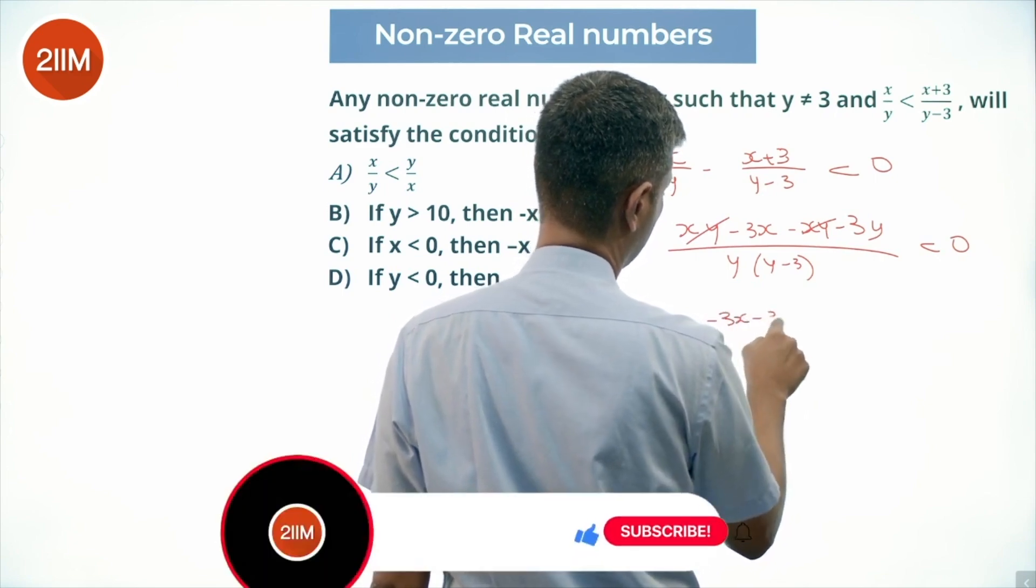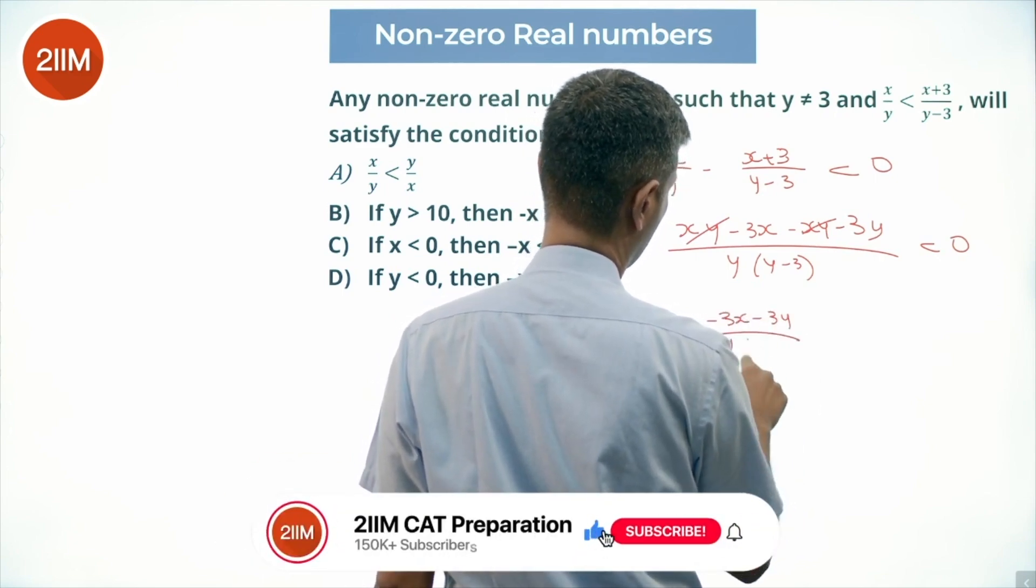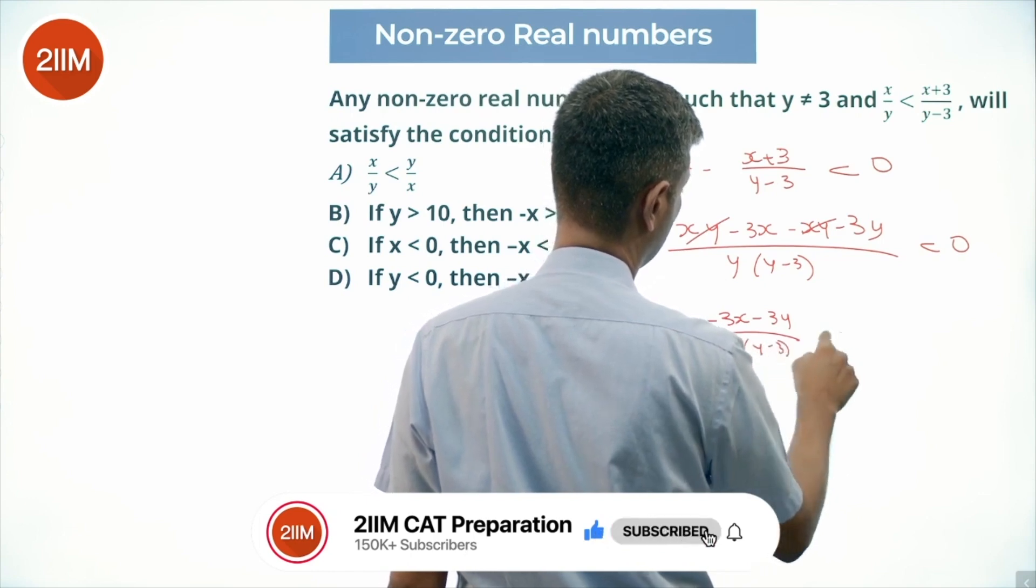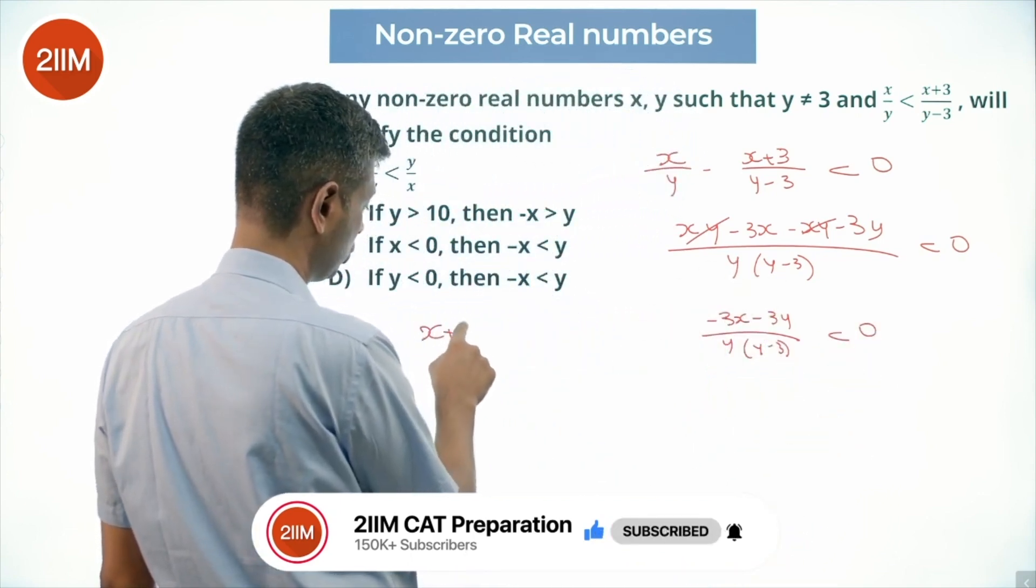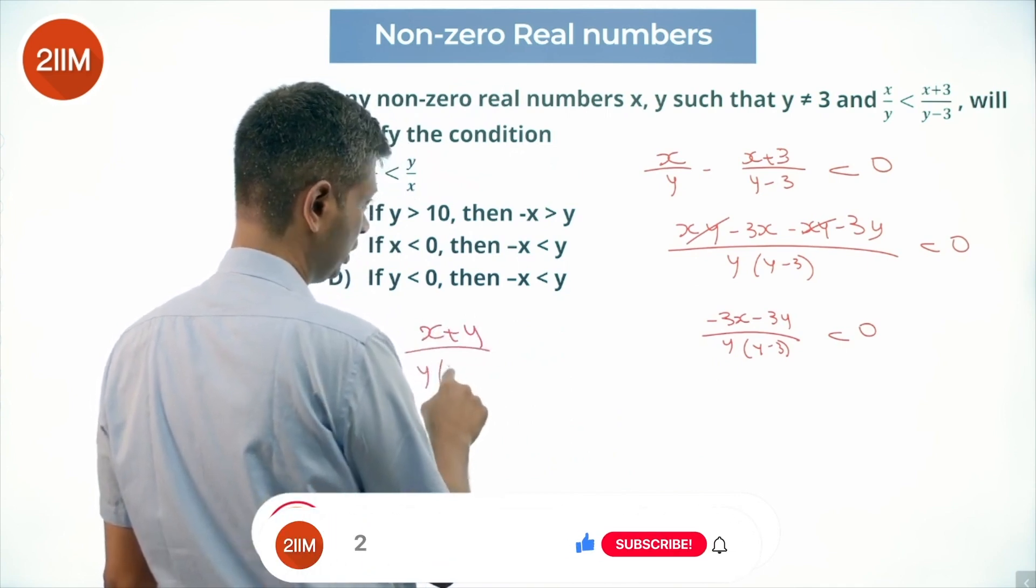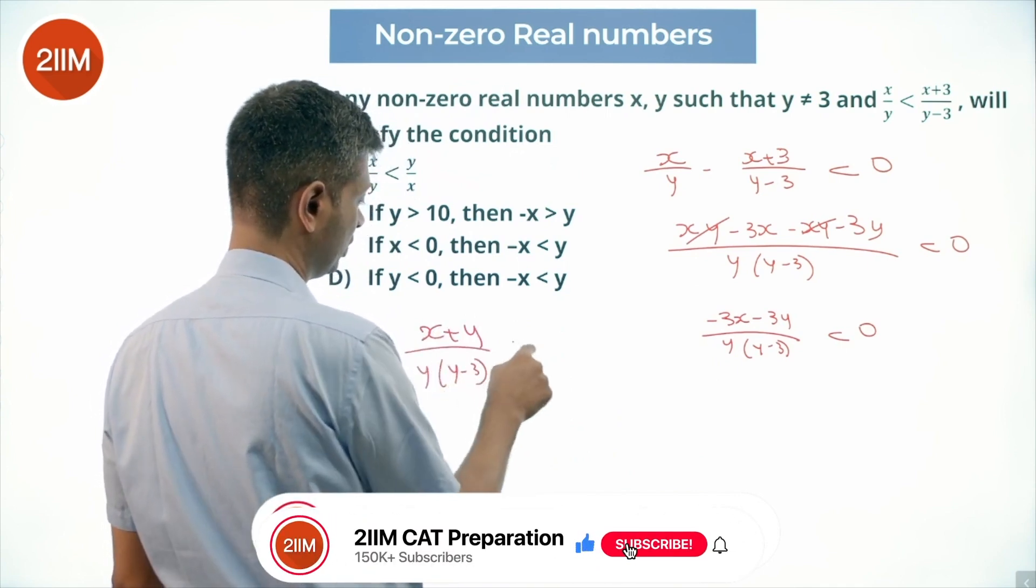So you have (-3x - 3y)/(y(y-3)) less than 0. -3 you can knock off, so I know I have (x+y)/(y(y-3)) is greater than 0.